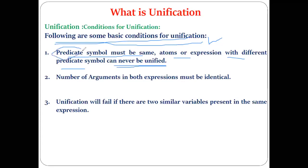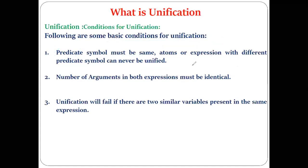The syntax for writing FOL is: first we write the predicate, followed by variables and constants. So if you are trying to make two atomic expressions identical, both expressions must have the same predicate symbol — then and only then can we make them unique or identical. That is the first rule.